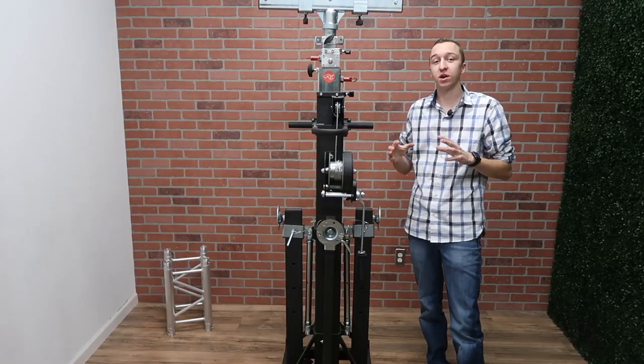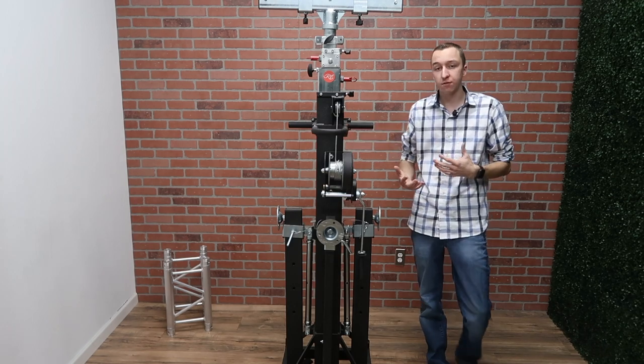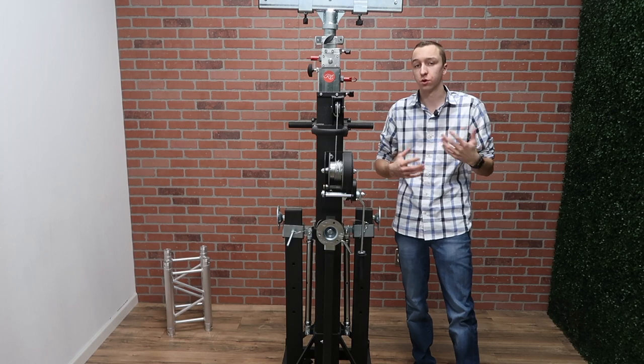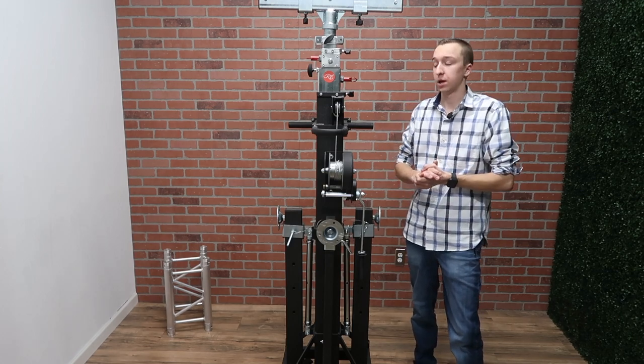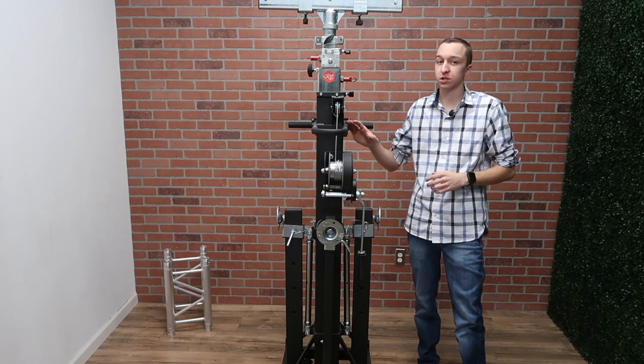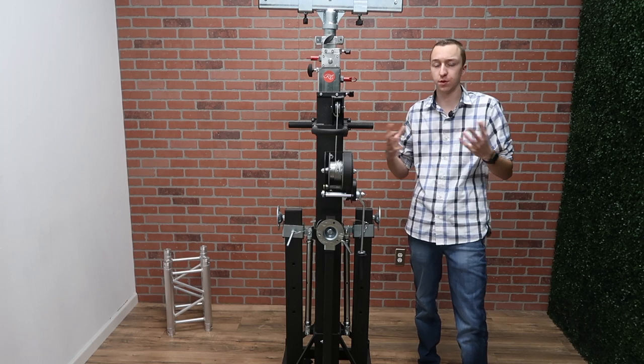Now the ST-180 weighs 229 pounds, and that's the unit itself, so it is a little heavy to lift into a truck or a van. It's something you're definitely going to want either a ramp or a lift gate for in terms of getting this in and out of your vehicle. Now the max load capacity of this crank stand is 440 pounds.